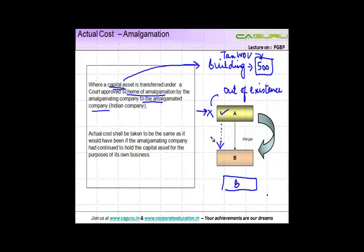the amalgamated company, which is company B. Now please note that in case of amalgamation, it is essential that the amalgamated company, or the surviving company, should be an Indian company. If this company is not an Indian company, then this benefit or provision is not applicable.